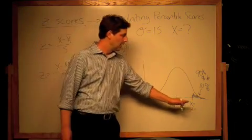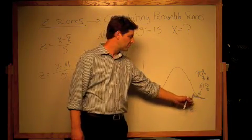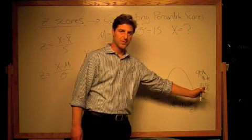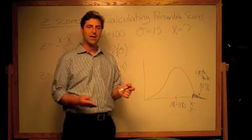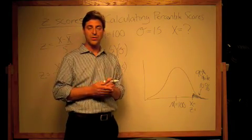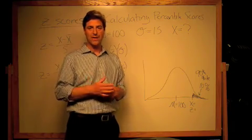Well, if we know that we're looking for the score that marks the 90th percentile of the distribution, we know that that score is going to be the spot that 10% of the distribution falls above and 90% falls below. So if we look in Appendix A for the area beyond z that is closest to 10%, or .10, that's how we find our z-score.